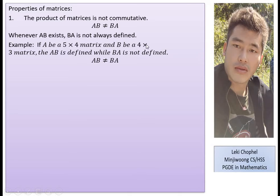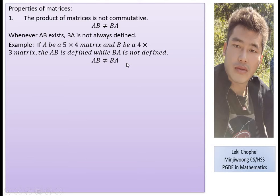But BA is not defined: B is 4×3 and A is 5×4, so the column of B is 3 and the row of A is 5 — they are not equal. Hence we cannot multiply BA. This shows that even if AB is defined, BA may not be.